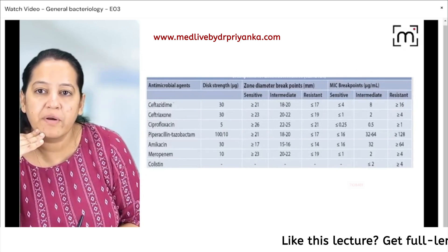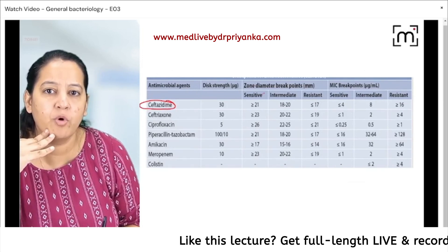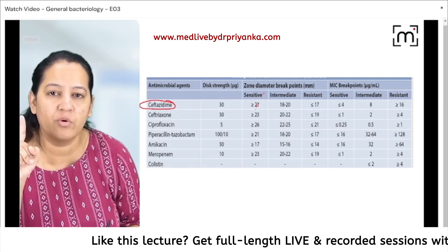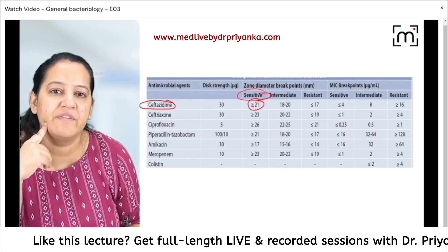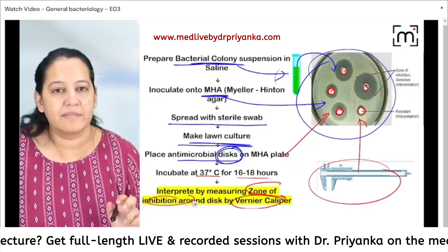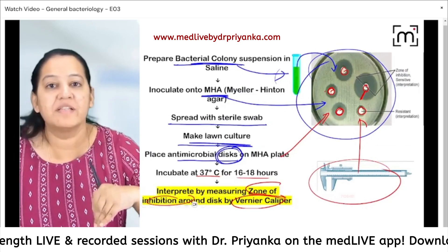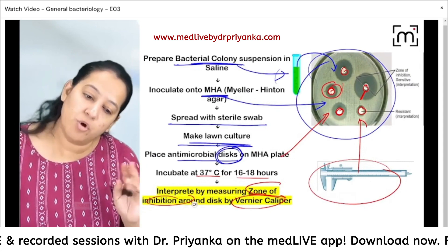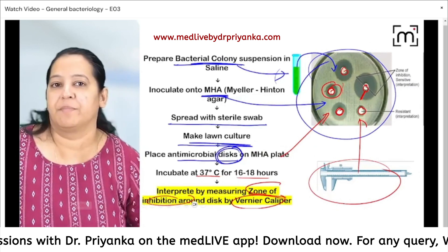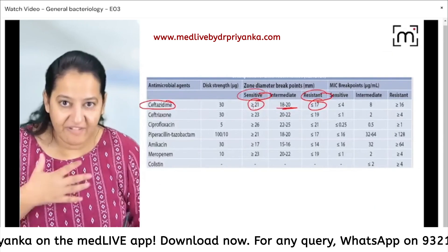Based on this measurement, we have an algorithm set given by the WHO. For example, for the antibiotic ceftazidime, if the zone of inhibition is more than 21 mm then it is sensitive; if it is less than 17 mm it is resistant; if it is between the two, it is intermediate. You don't have to memorize these exact numbers — the point is you measure the zone of inhibition. If it is within the sensitive range, the organism is susceptible; if it is in the resistant range, the organism is resistant; if it is in between, the organism is intermediate.